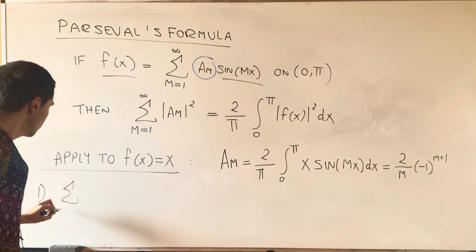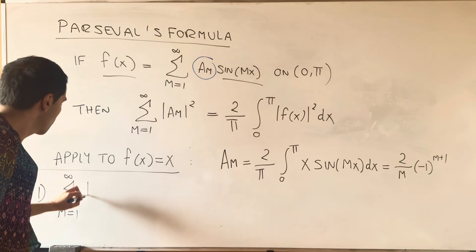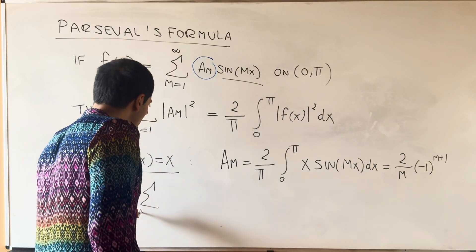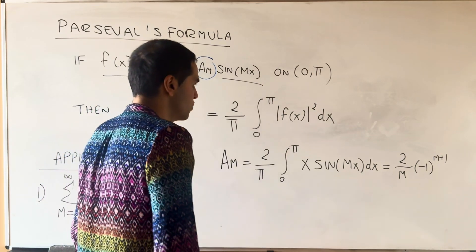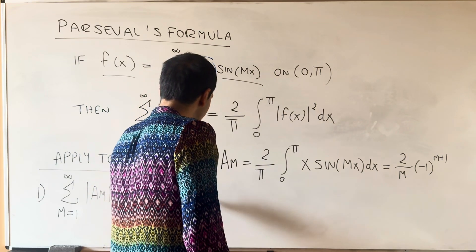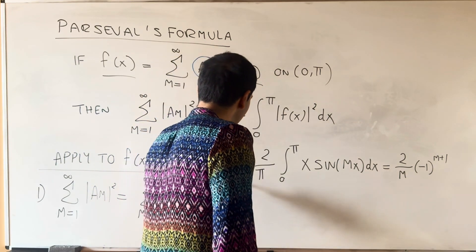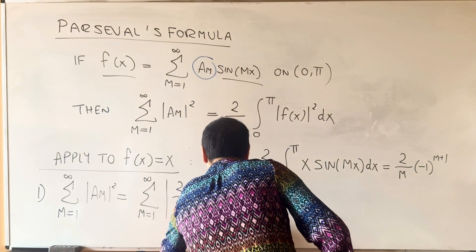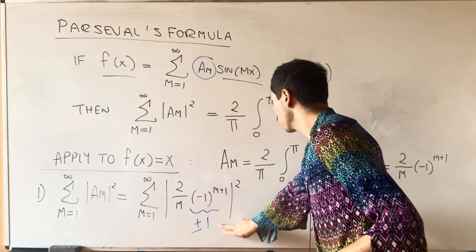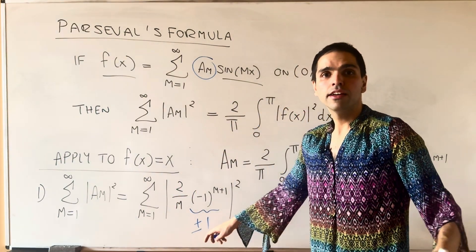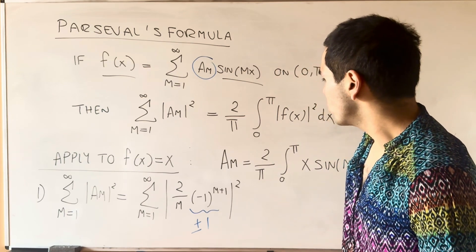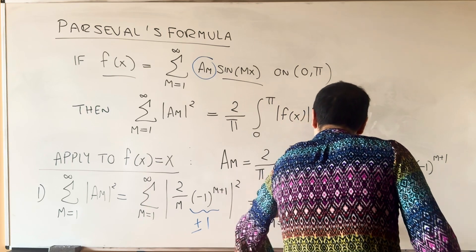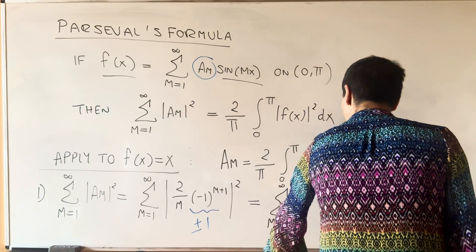So in this case, the sum from 1 to infinity of am squared. Well, that is the sum from 1 to infinity of the absolute value of 2 over m times (-1) to the m plus 1, squared. However, what is (-1) to the m plus 1? That is either 1 or -1. So in particular, if you square that, the square of this is 1, and so what we're left with is the sum from 1 to infinity of 4 over m squared.